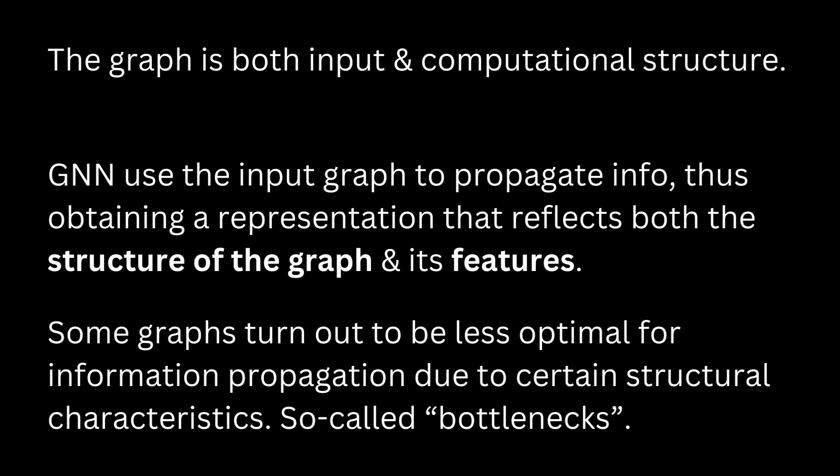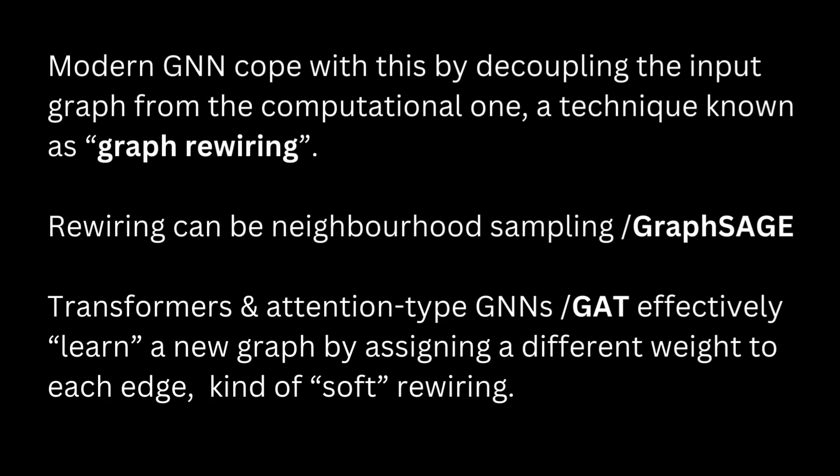The graph, as you know, is both an input and computational structure. GNNs use the input graph to propagate information, thus obtaining a representation that reflects both the structure of the graph and its features. Now, some graphs turn out to be less optimal — nasty — for information propagation due to certain structural characteristics. We call those the bottlenecks.